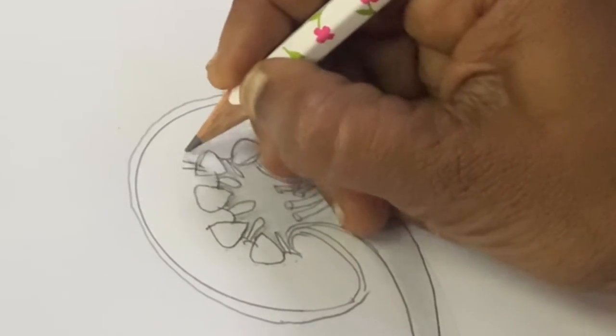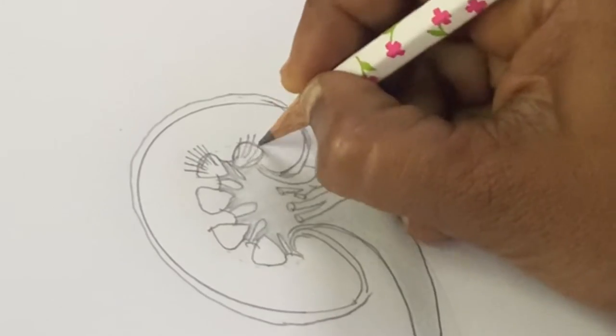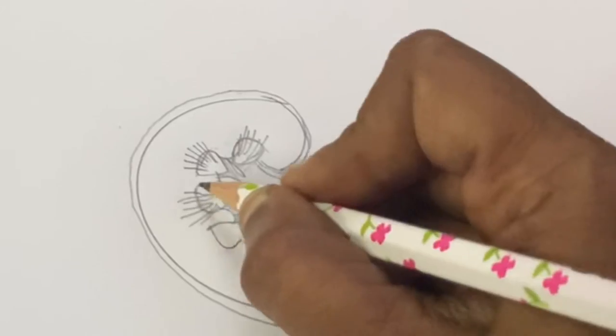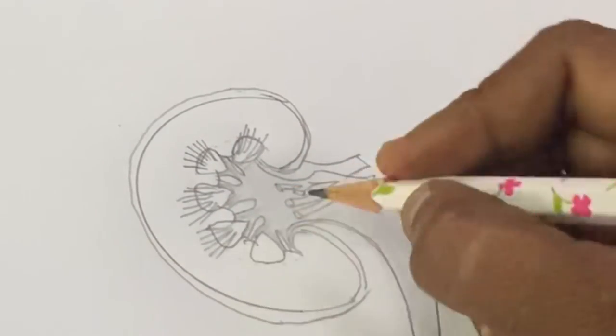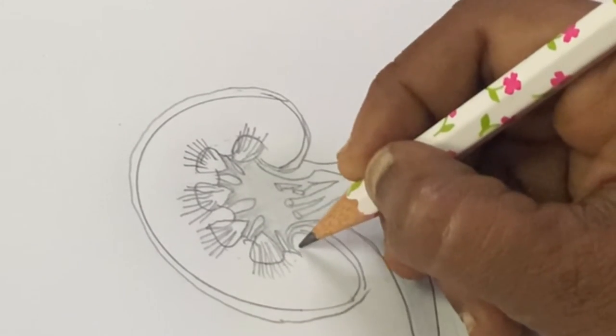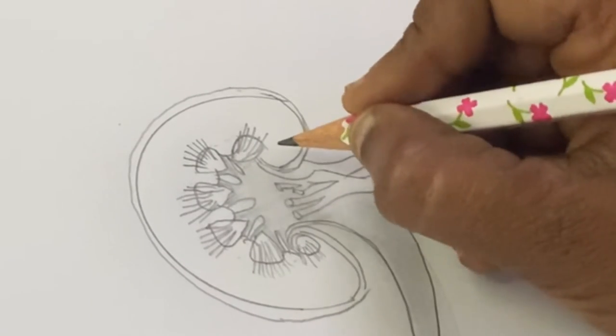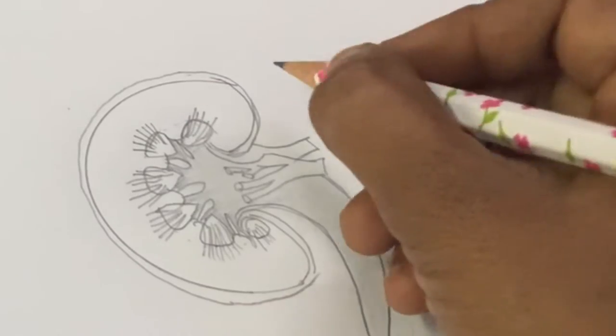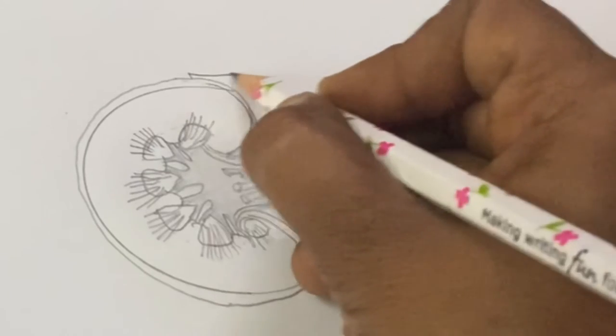For nephrons, you have to draw the nephron collecting dots. This is how you can draw the LS of kidney. This is very simple. Let us mark the parts. This one is the renal capsule.